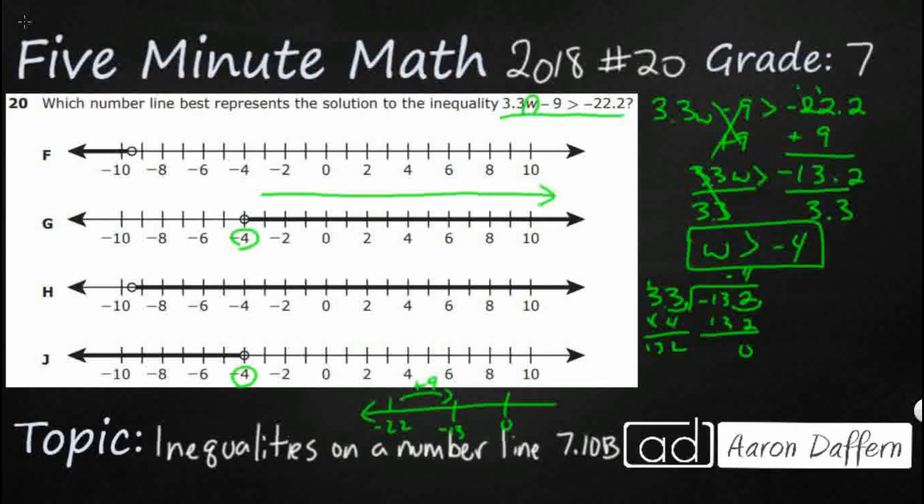So one thing we always need to realize is that these are open circles, which means I cannot include negative 4. So if this were greater than or equal to, then I could close the circle and include it.